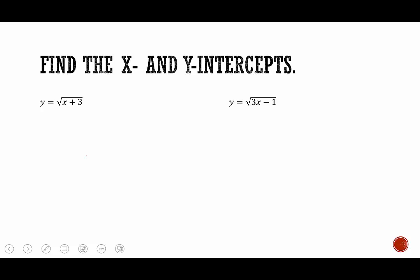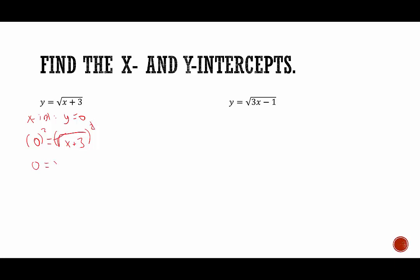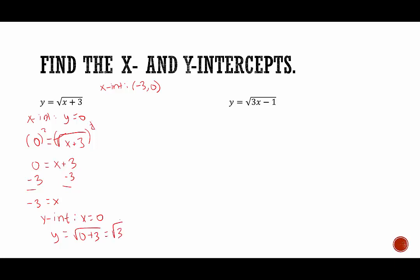Here we're going to find the x and y-intercepts of square root functions. To find the x-intercept, we plug in 0 for y, giving us 0 equals the square root of x plus 3. To get x out of the radical, we square both sides. 0 squared is 0, and the square and square root cancel, leaving x plus 3. Subtracting 3 from both sides gives us x equals negative 3. So the x-intercept is (negative 3, 0). To find the y-intercept, we plug in 0 for x: y equals the square root of 0 plus 3, which is the square root of 3. So the y-intercept is (0, √3).